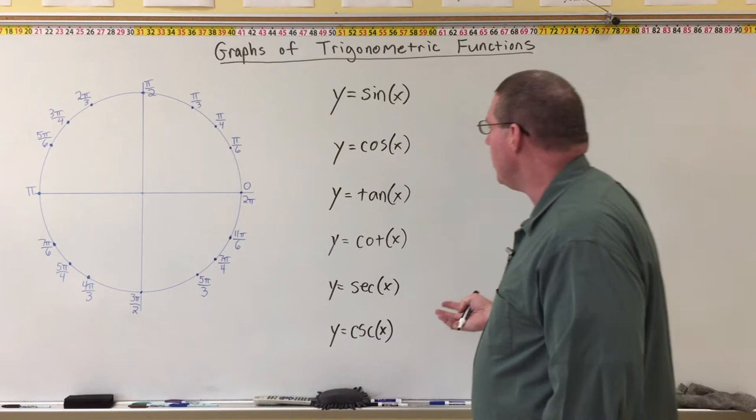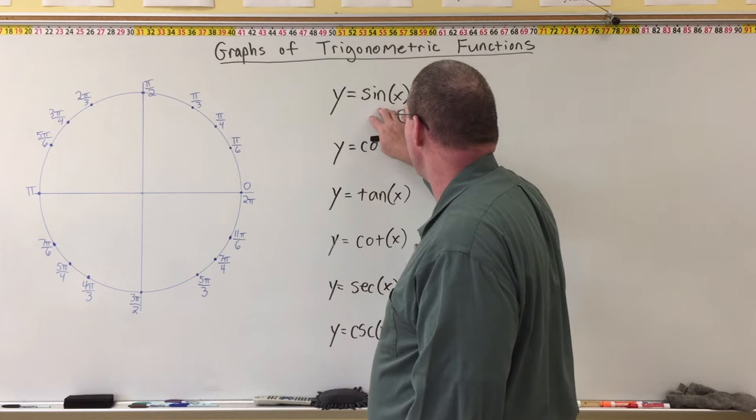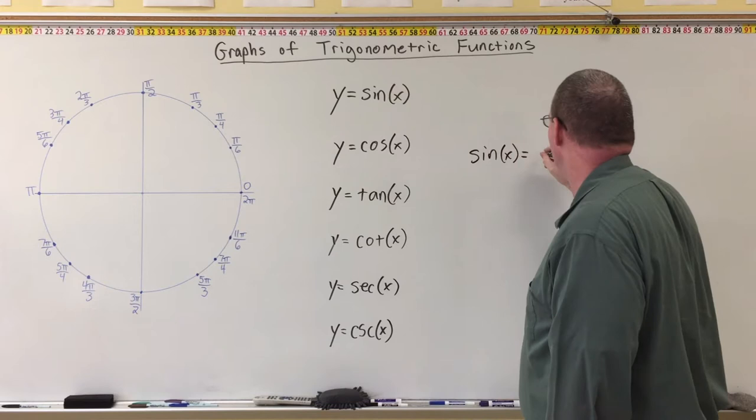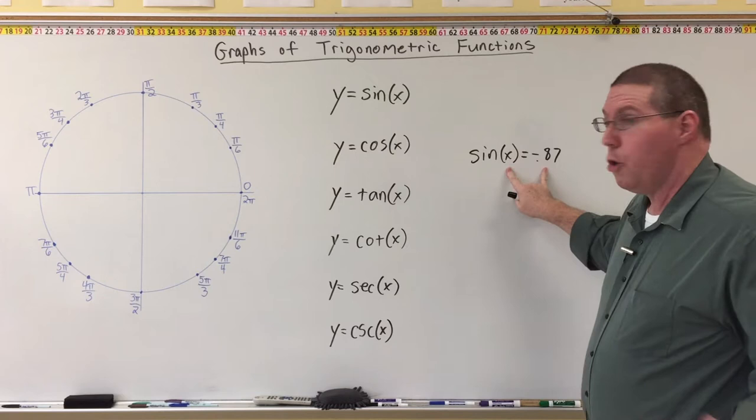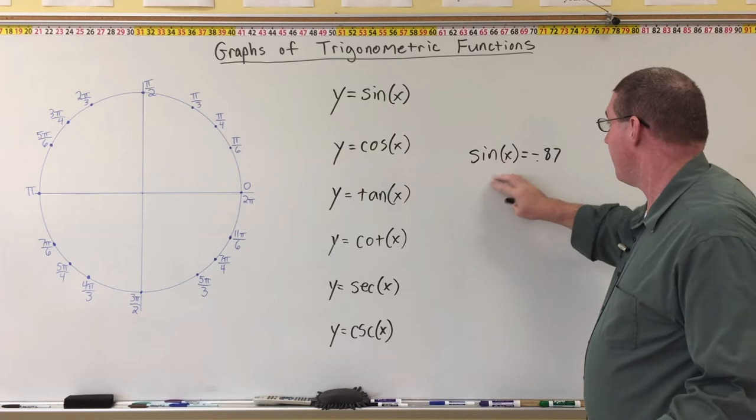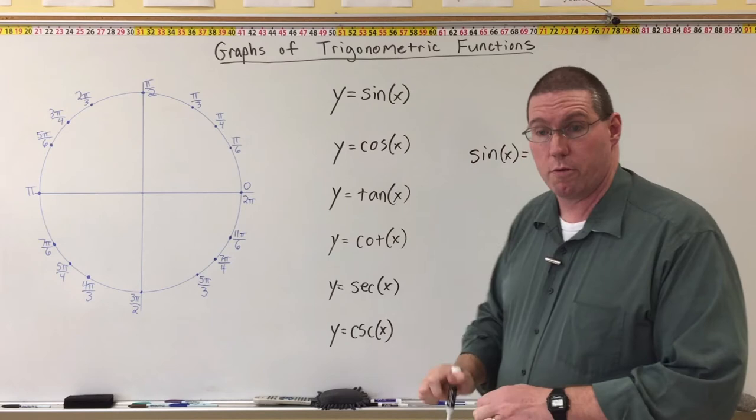This is not a huge leap from what we have already done. It's just that we've dealt with sine of x as part of an equation — for example, sine of x equals negative 0.87 — and as an equation we solved for x. In that particular case, we made it so that sine of x only equaled one number, not an infinite number of possible values.